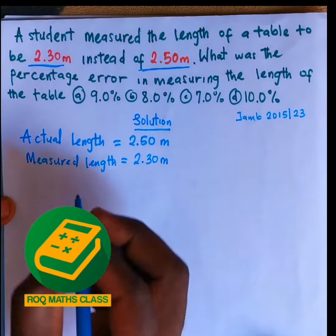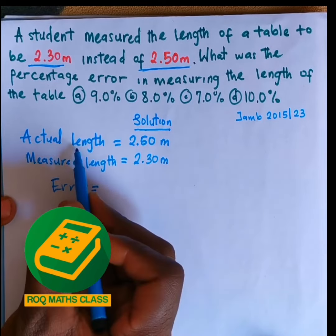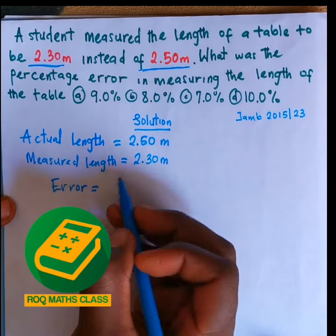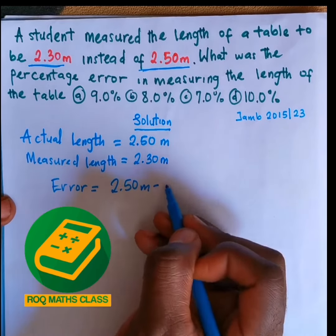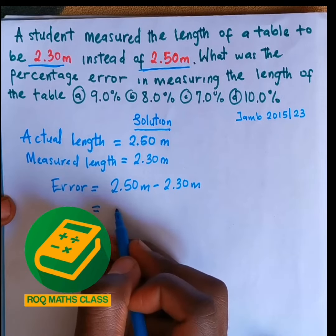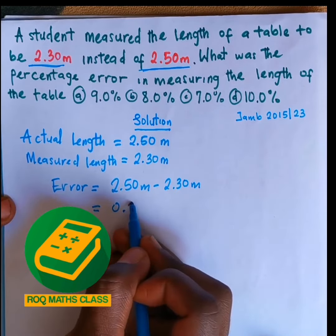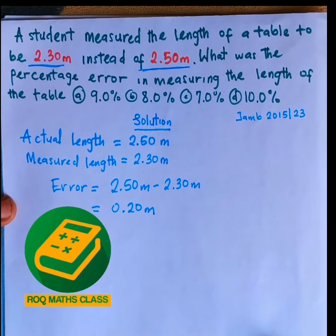So the error made: Error is actual length minus the measured length. So I have 2.50 meters minus 2.30 meters, which is the same thing as 0.20 meters. So this is the error made.